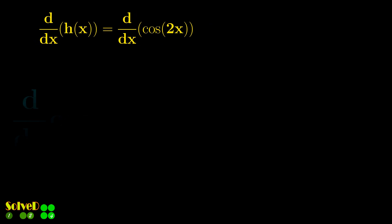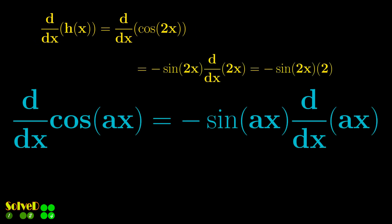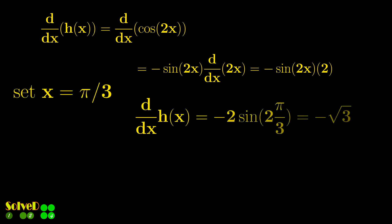Let's find the derivative of the given function and then set x equals pi by 3. This gives minus square root of 3, which is the slope of the line and is equal to tangent theta.